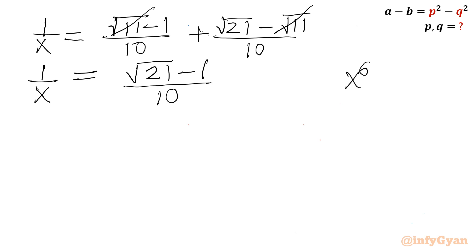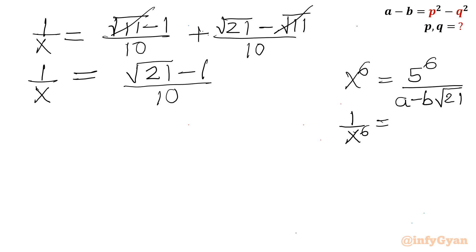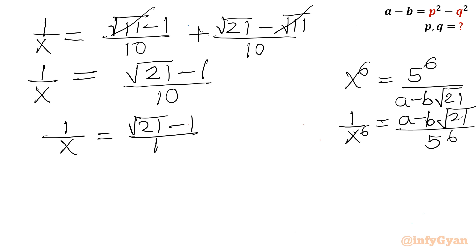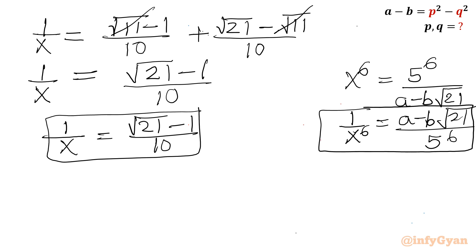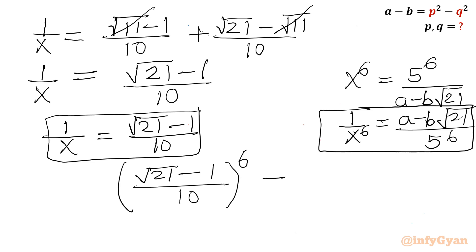Our original equation was x to the power 6 equals 5 to the power 6 over A minus B times square root 21. So I can calculate 1 over x from here. I can write 1 over x to the power 6, which will equal A minus B times square root 21 divided by 5 to the power 6. So the LHS is root 21 minus 1 over 10, whole to the power 6, and RHS is A minus B times square root 21 divided by 5 to the power 6.